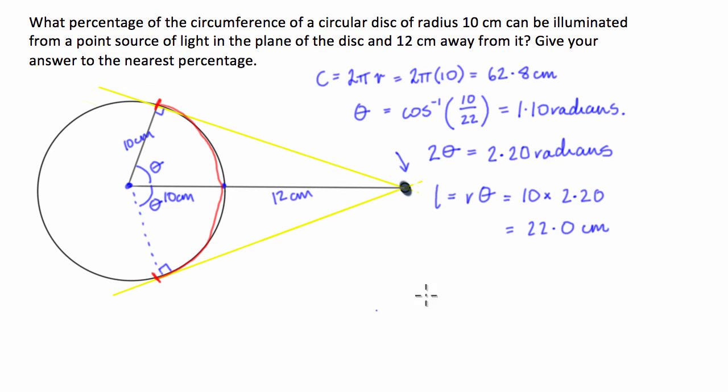So the percentage of our circumference is going to be equal to the length of the arc, so 22, divided by the total circumference, which is 62.8. And then we're going to multiply that by 100 to get it into whole number terms. And we get a percentage that's approximately, because I'm just doing it to the nearest percentage point, 35%.